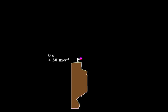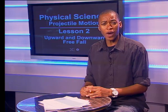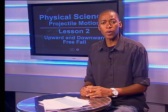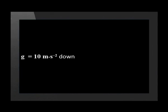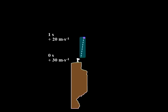Let's look at some data for upward and downward projectile motion. The ball leaves the thrower's hand at 30 meters per second upward. If we choose upward to be the positive direction, this is positive 30 meters per second. As it rises it slows, losing approximately 10 meters per second every second. This is because it accelerates at the acceleration due to gravity G, which is about 10 meters per second squared downward.